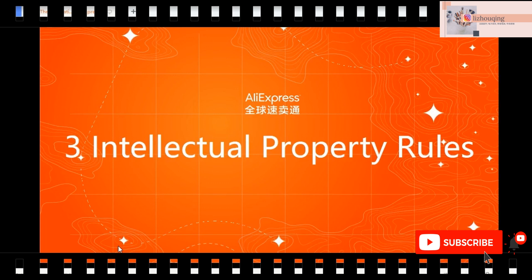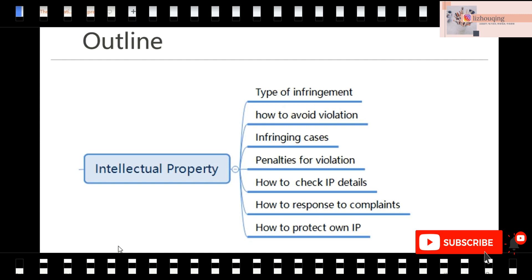That is all about product release. Now we move to the intellectual property rules — this is the emphasis of this lecture and it is very important, so we should listen carefully. In this chapter, there are seven aspects: the types of infringement, some infringing cases (to help avoid violations), the penalty for violations, how to check IP details, how to respond if someone makes a complaint against your listing, and how to protect our own IP.